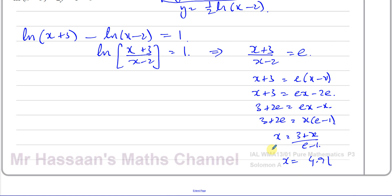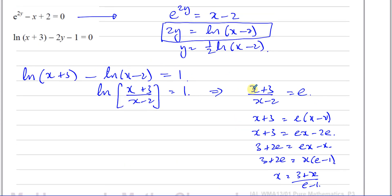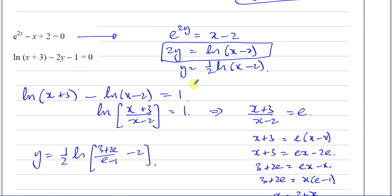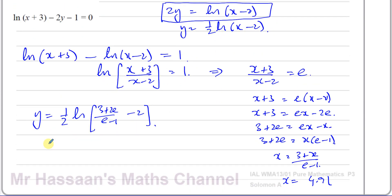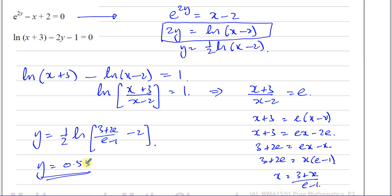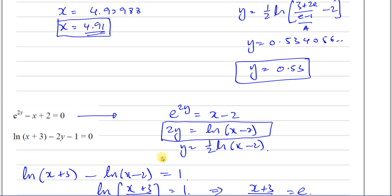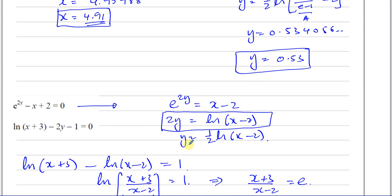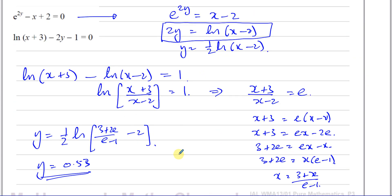So maybe this was even an easier way of doing it, but either way is fine. To find Y, once we've found X, we say Y equals one half times ln of (3 plus 2E) over (E minus 1) minus 2 — exactly the same as what we did before. Once we've found X, we put it into the equation already written in ln form and find Y, which was 0.53. Two different methods: either make both equations exponentials, or make both logarithms — we get the same answer either way.